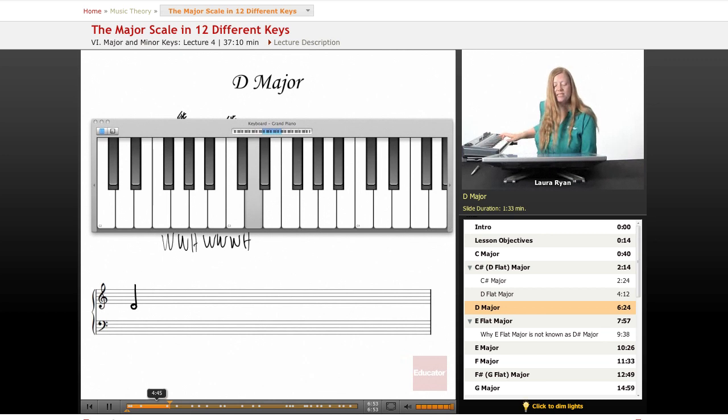From D to E, there's our whole step. E to F sharp, whole step. F sharp to G, half step. G to A, whole step. A to B, whole step. B to C sharp, whole step. C sharp to D, half step.